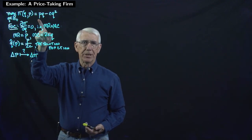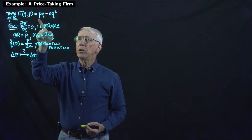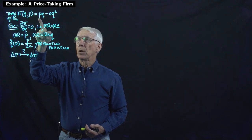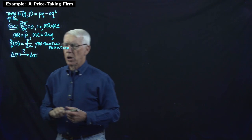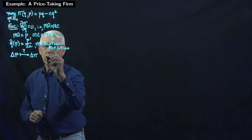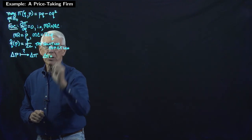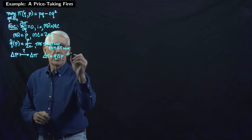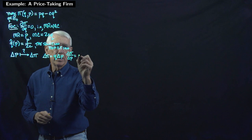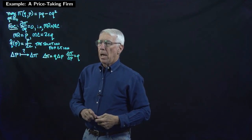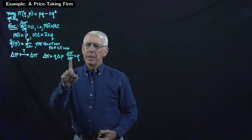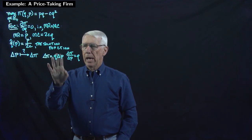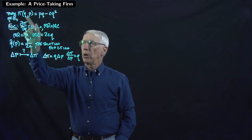You might say that if the price goes up by a dollar, profit is going to increase by a dollar on every unit sold, so profit will increase by Q dollars. A first pass at this is probably to say the change in profit is Q times the change in price, or d(profit)/dP equals Q. But notice that can't quite be correct.